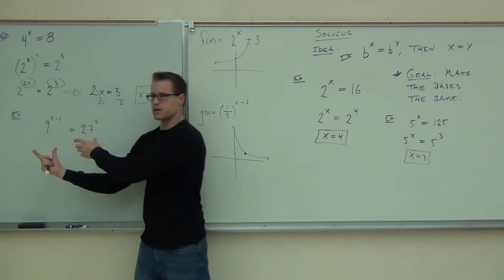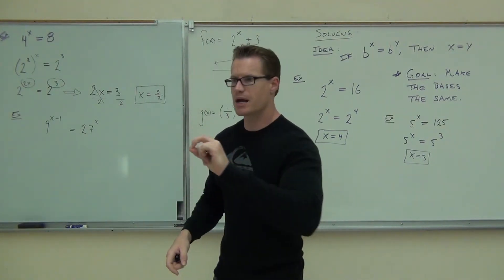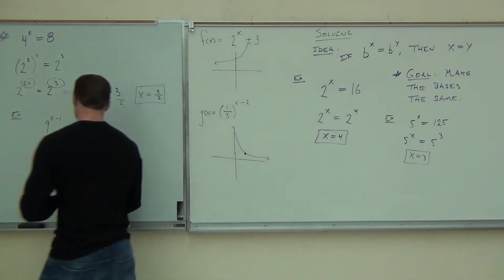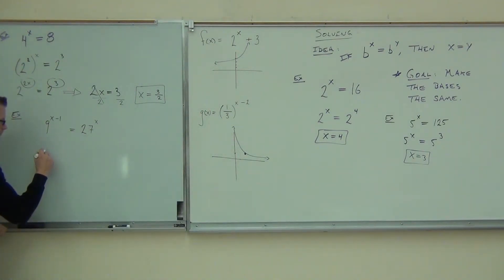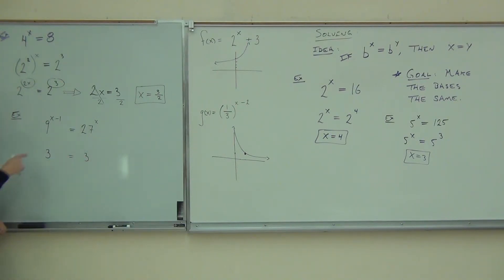3. Okay, 3. So, now, I want you on your paper to translate 9 into a power of 3 and 27 into a power of 3. Do that for me. Okay. What's 9? 9 is 3 to what power? 3. 3 to the what? 3 to the second. 3 times. And 27 is 3 to the? 3.